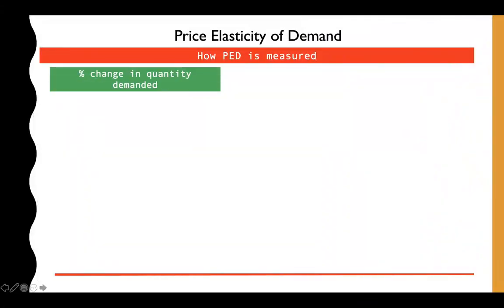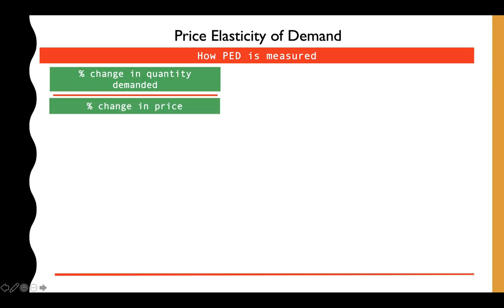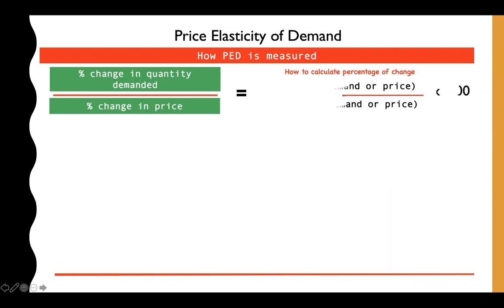How is PED measured? It is measured using the percentage change in quantity demanded divided by the percentage change in price. There are two things to get from this equation — we need to calculate each percentage change separately before dividing them.